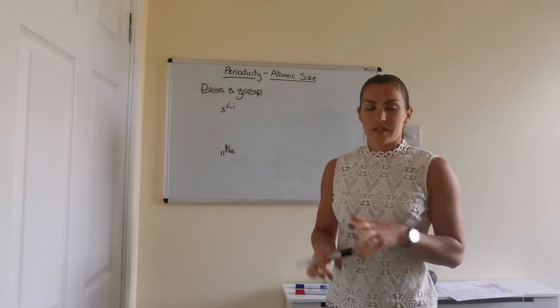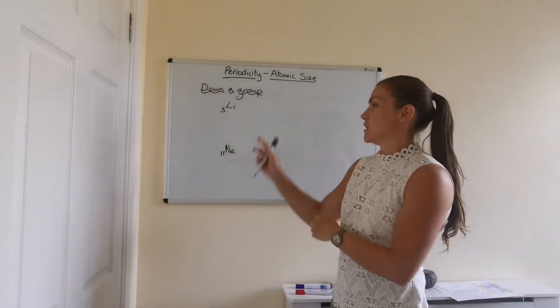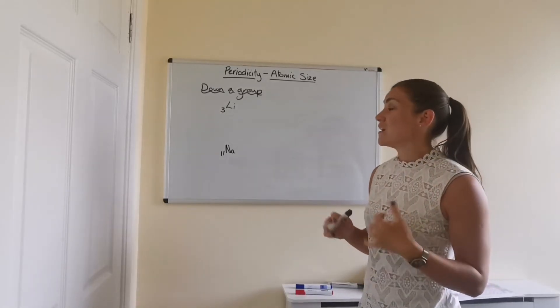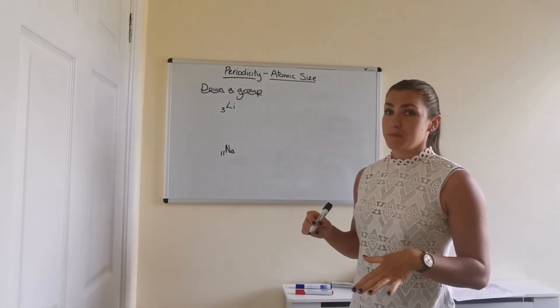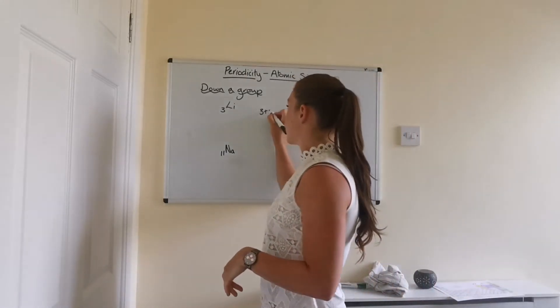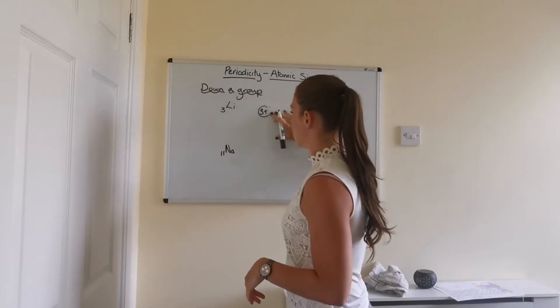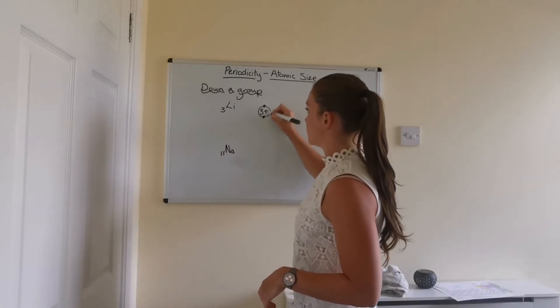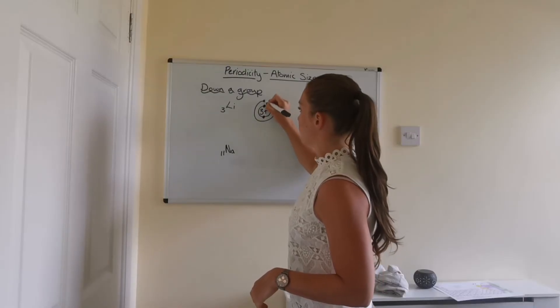So now we're going to look at atomic size going down a group. So I've taken lithium and sodium as the examples this time. So again, in order to explain this better, I'm going to draw the atoms. So we already drew lithium before, so it's got a 3 positive charge in the middle with the electron arrangement 2, 1.